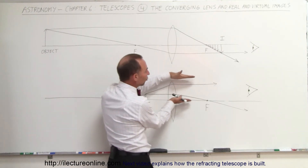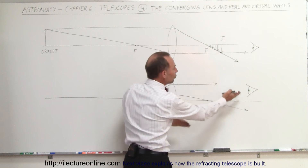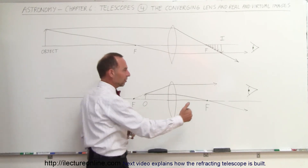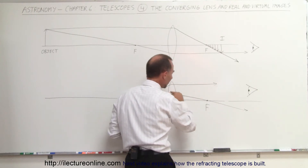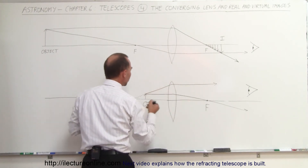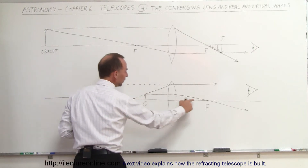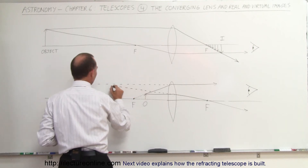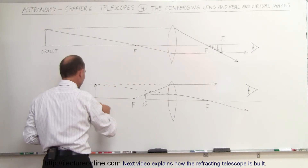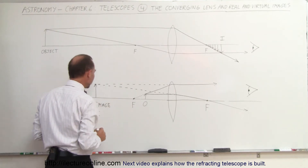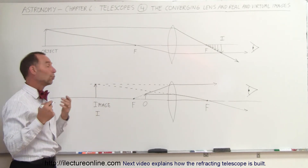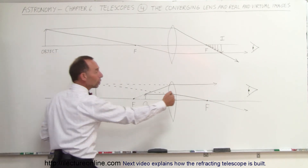Notice now that in this case the rays do not converge — they do not come together. Since they do not converge, they do not form an image on the back side of the lens, therefore they do not form a real image. Now what does the observer see? The observer is looking through the lens, sees a ray coming in this direction and another ray coming in this direction. So it will appear as if there is an image somewhere back here — but if you take a piece of paper and put it right there, there will not be an image. An image will not really appear; it just seems to appear there when you look through the lens.